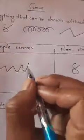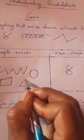Simple curves are those which do not cross themselves. A circle is a simple curve; a quadrilateral is a simple curve; a triangle is a simple curve. Now comes simple closed curves and non-simple closed curves. First, closed curves: if the starting point and end point of the curve is the same, then it is called a closed curve.